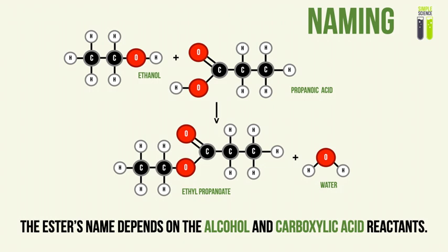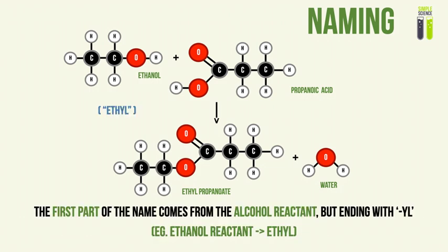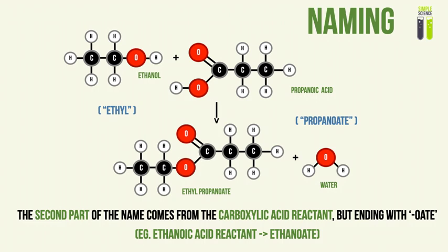How it's named is that the first part of the name, ethyl propanoate — 'ethyl' — comes from the ethanol reactant. Basically, you take the ethanol name and replace the ending with '-yl', so it becomes 'ethyl'. Similarly, the second part of the name comes from the carboxylic acid reactant. The propanoic acid name has its ending changed to '-oate' instead of '-oic acid'.